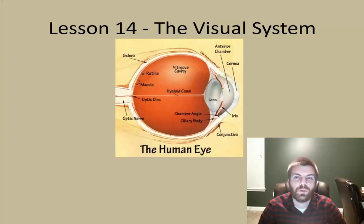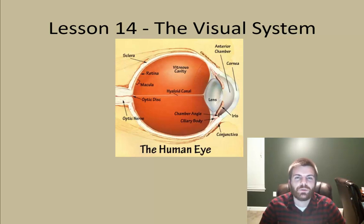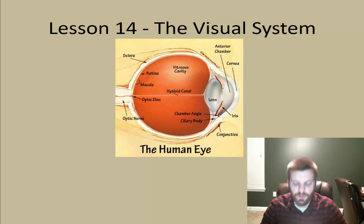Welcome back to another lesson as part of the AP Psychology course. This is lesson number 14 on the visual system. This presentation is mostly going to present parts of the eye as well as processes that take place that are part of the visual system. So let's go ahead and dig right in.